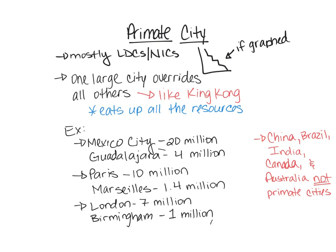India is tricky because it has three really large cities and then a huge drop-off. Some argue it could be a primate city country, but since the definition is one dominant city and India has three, it generally doesn't qualify. The US also isn't a primate city country.